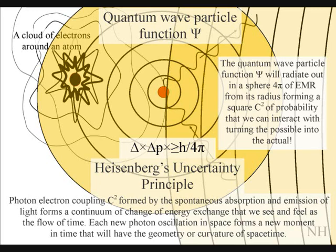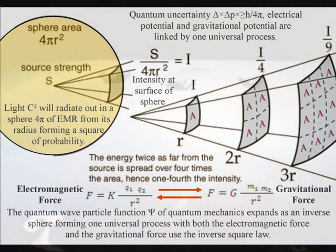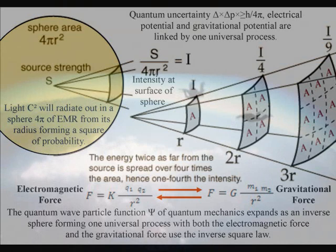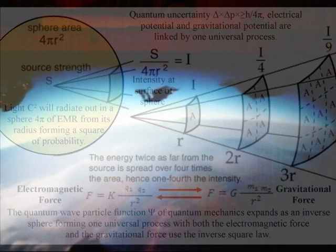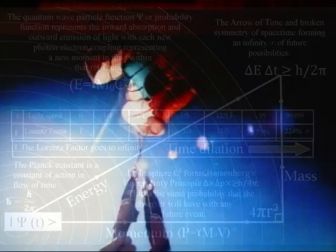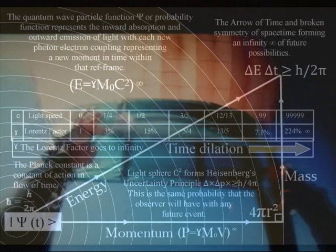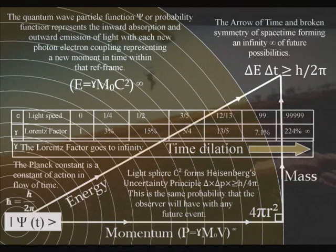In this theory, this forms part of one universal process with the inverse square law of Newton's gravity. The wave-particle duality of light is acting like the bits, or zeros and ones, of a computer, forming a blank canvas that we can interact with, turning the possible into the actual within our own reference frame. Time is an emergent property, formed by a process of spherical symmetry forming and breaking, that we see and feel as the future continuously coming into existence, light photon by light photon, relative to the position and the energy and momentum of the atoms.